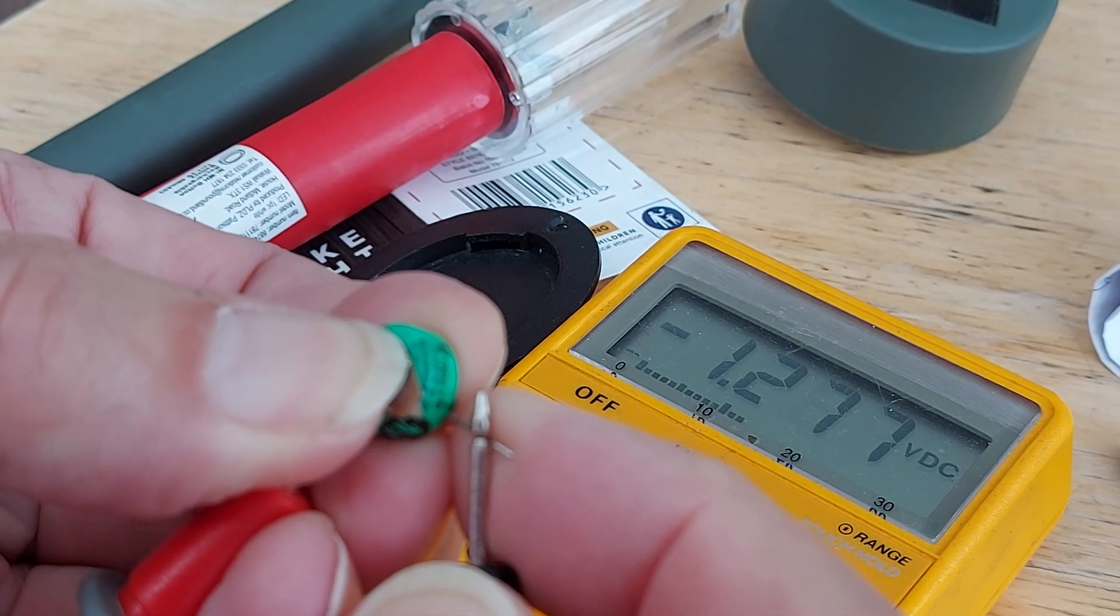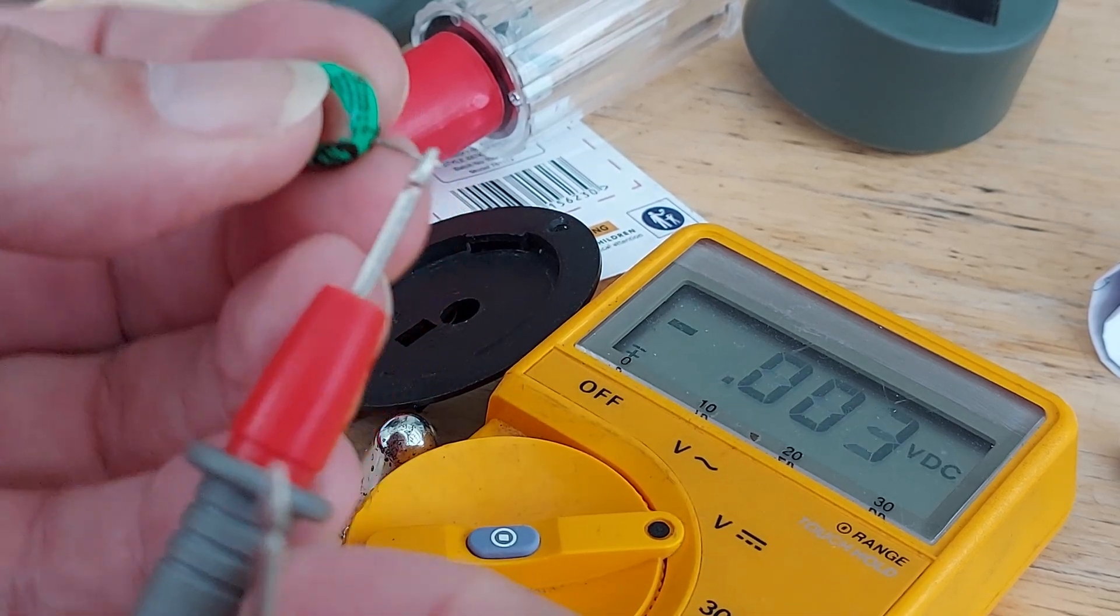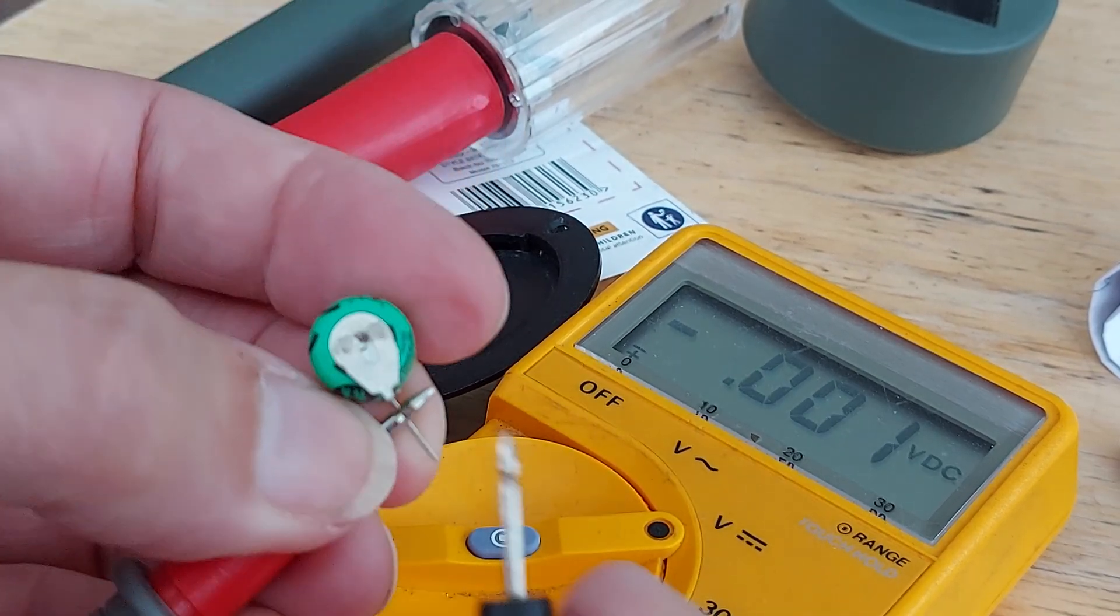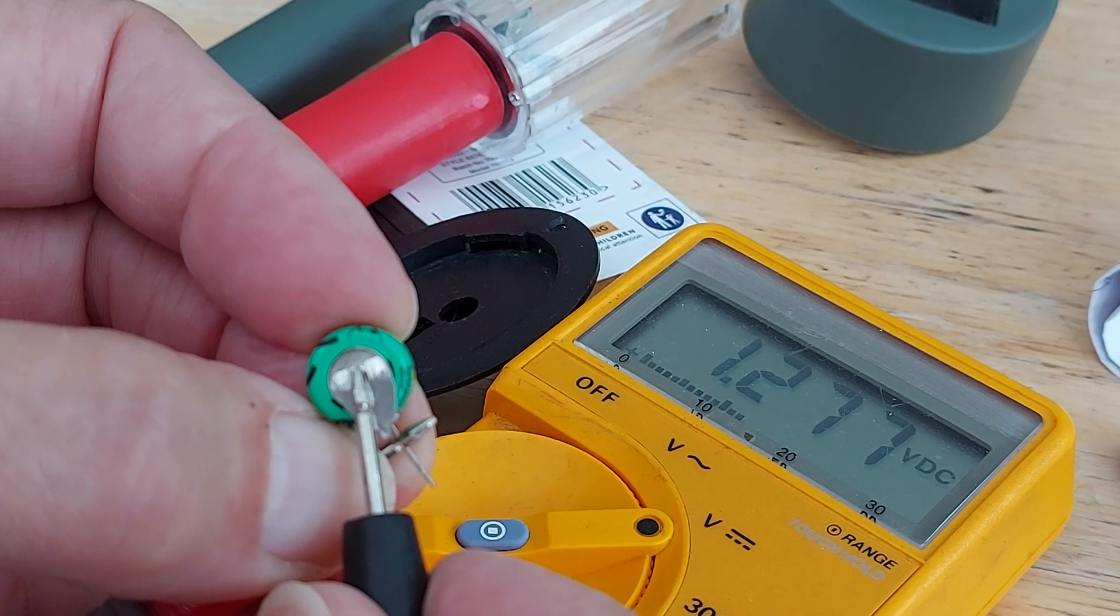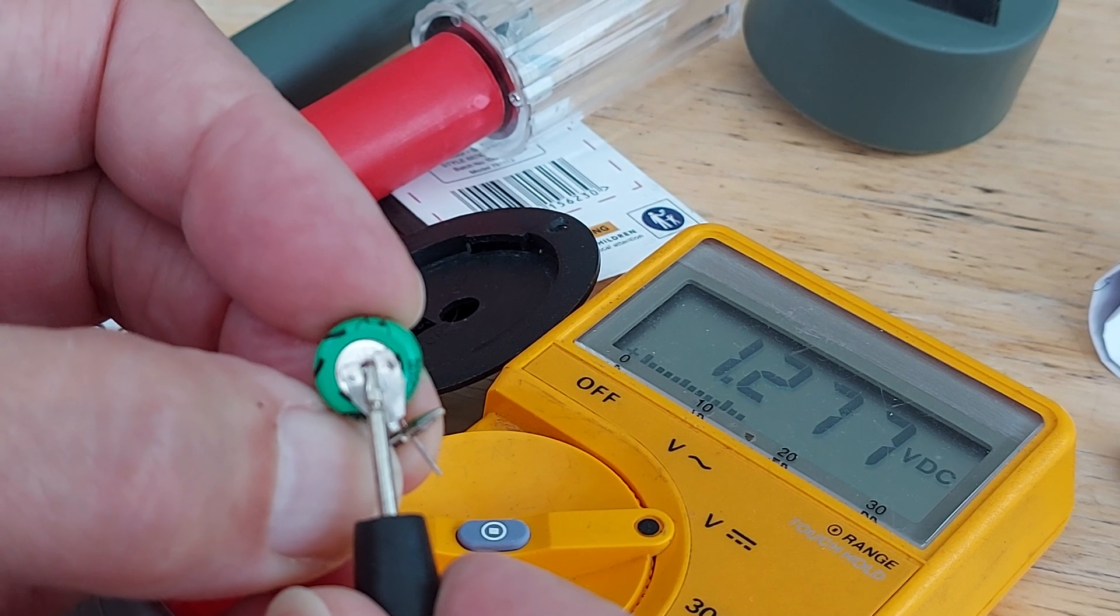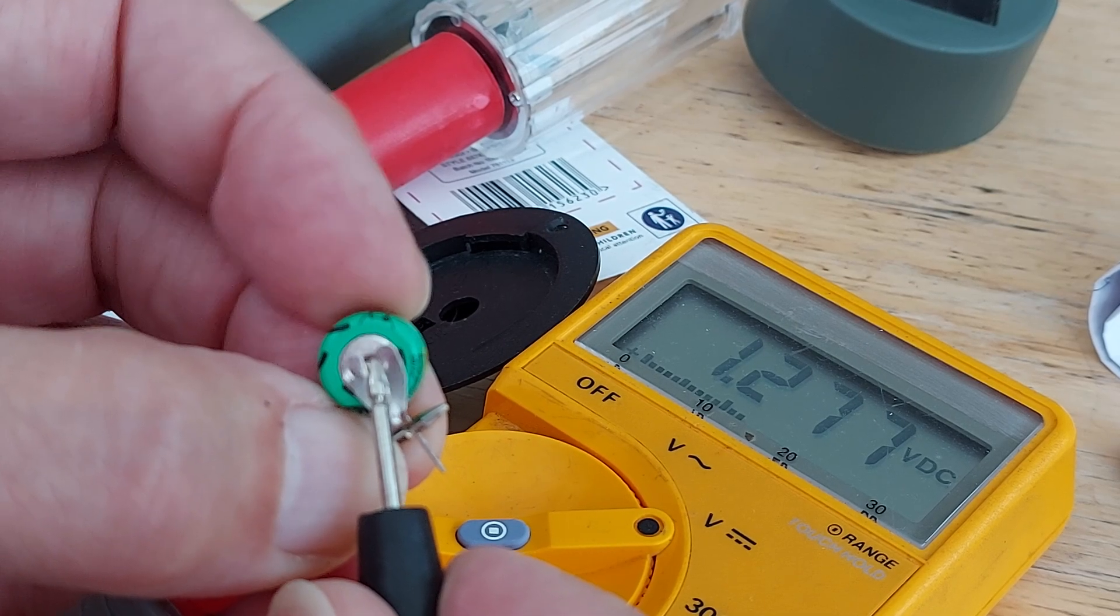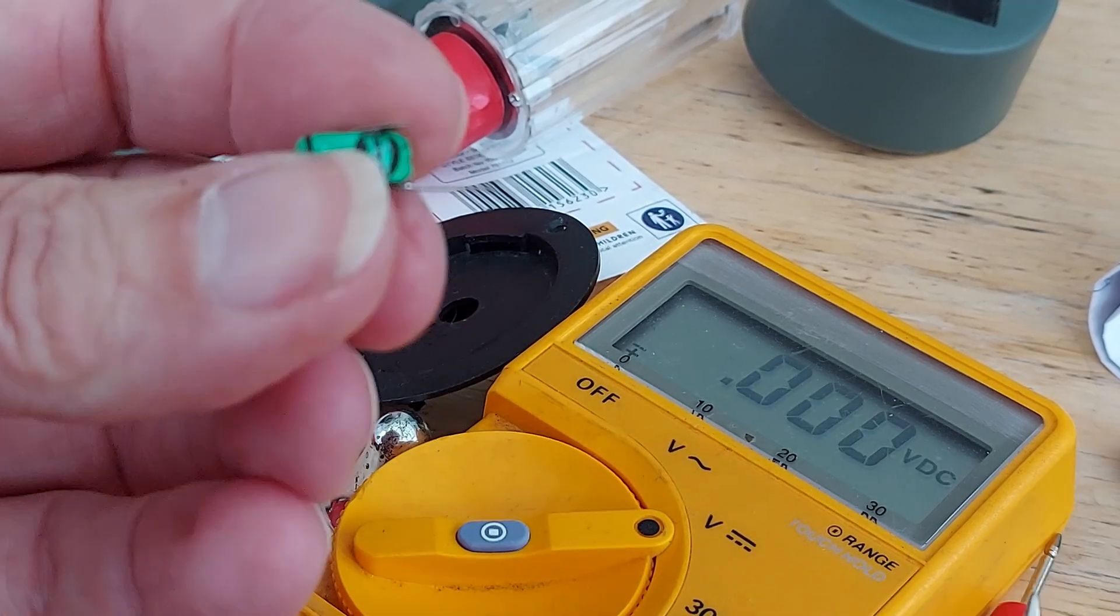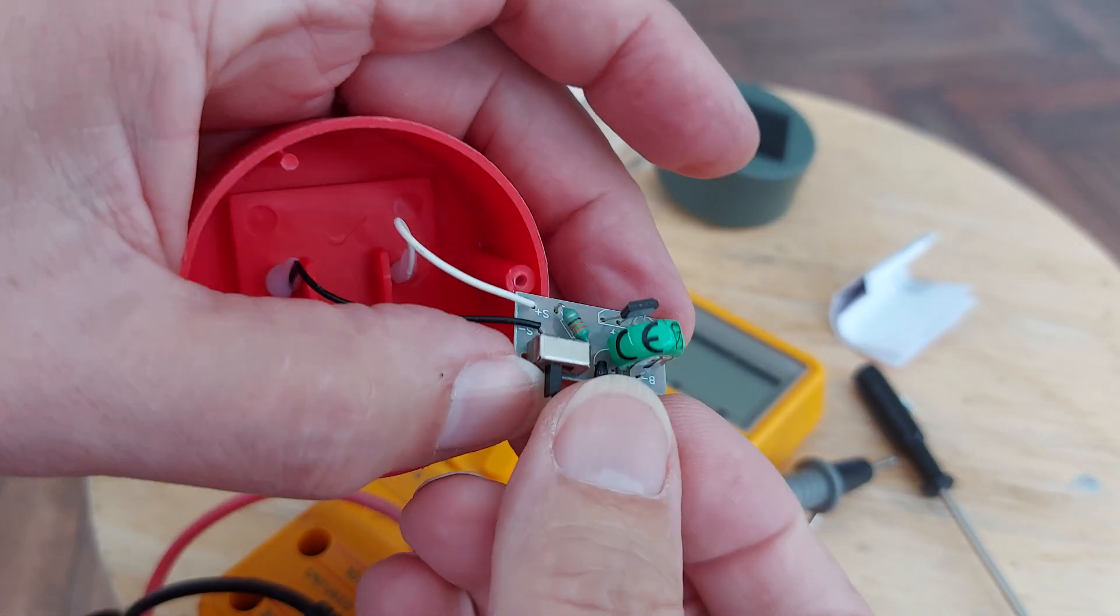It does actually have 1.2 volts on it. Except I've connected that the wrong way around. Positive, negative. There we are, 1.27 volts. So that's practically fully charged for a nickel metal hydride. It got about 1.3. So battery's okay, it was just disconnected. Soldered back in place.